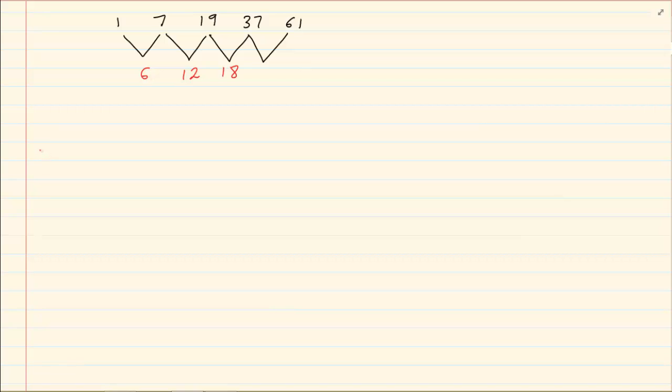So when you're starting you're going to see if there is a first difference. If there is no first difference you then move to a second difference. So now we're going to say 12 minus 6 gives me 6. 18 minus 12 gives me 6. You can see now that there is a constant second difference.